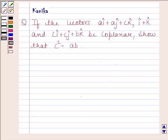Hi and welcome to the session. Let us discuss the following question. The question says if the vectors ai cap plus aj cap plus ck cap, i cap plus k cap, and ci cap plus cj cap plus bk cap are coplanar, show that c squared is equal to ab. Now begin with the solution.